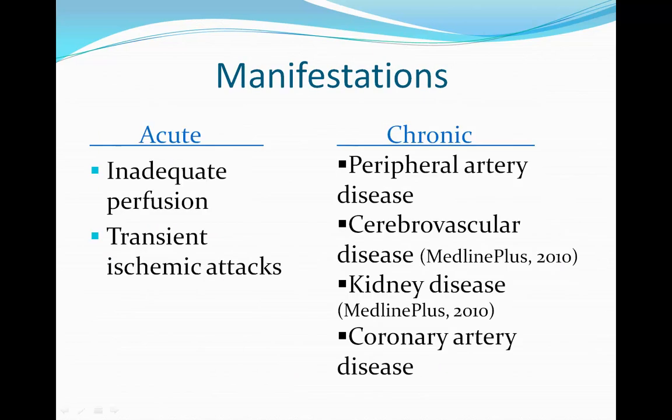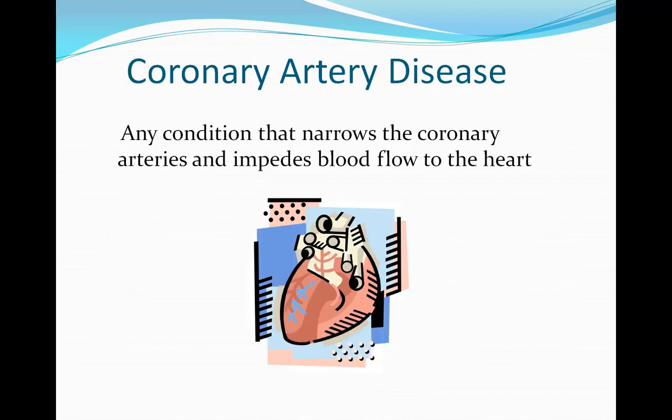Manifestations of atherosclerosis include inadequate perfusion and transient ischemic attacks. Chronic manifestations include peripheral artery disease, cerebrovascular disease, kidney disease, and coronary artery disease. Coronary artery disease is most often caused by atherosclerosis — it is any condition that narrows the coronary arteries and impedes blood flow to the heart.